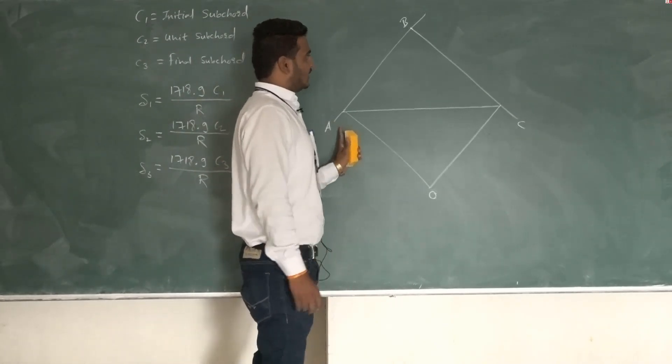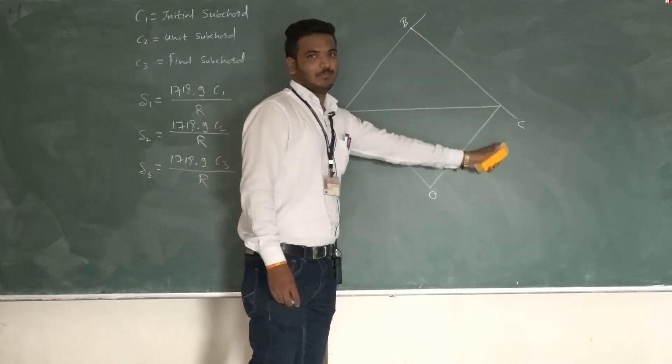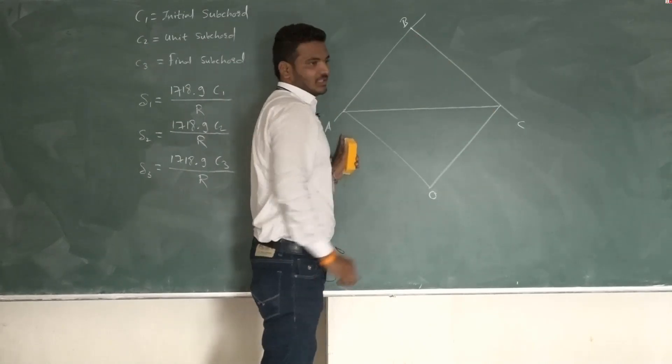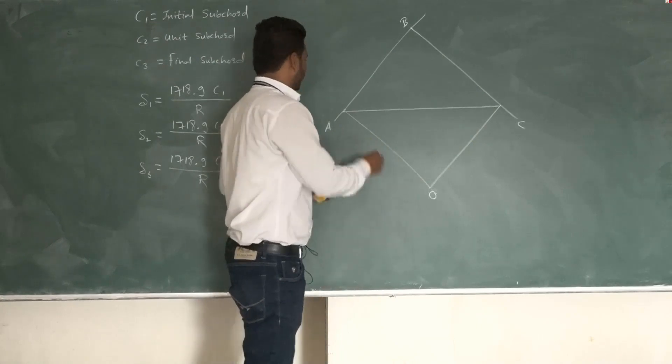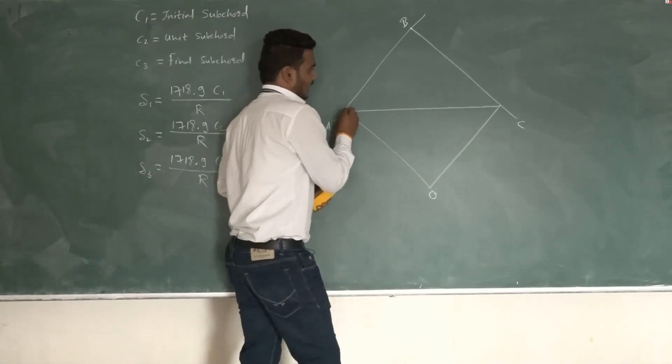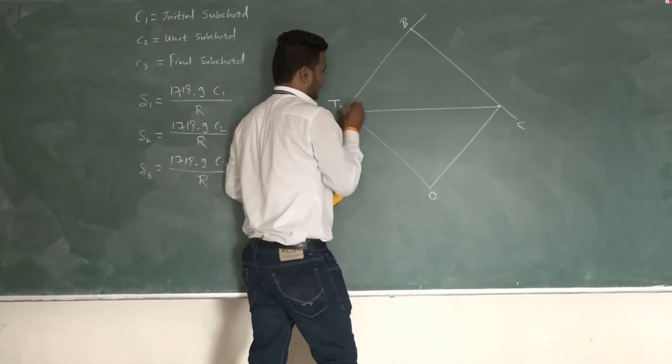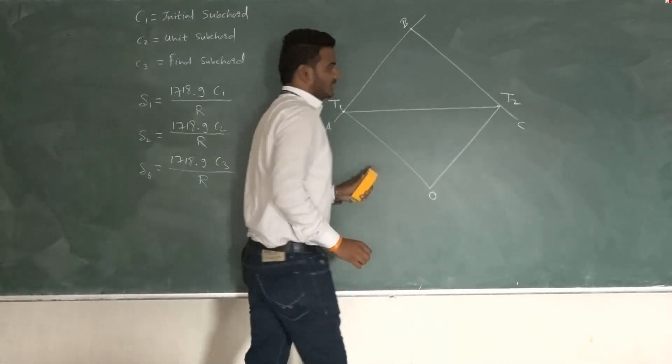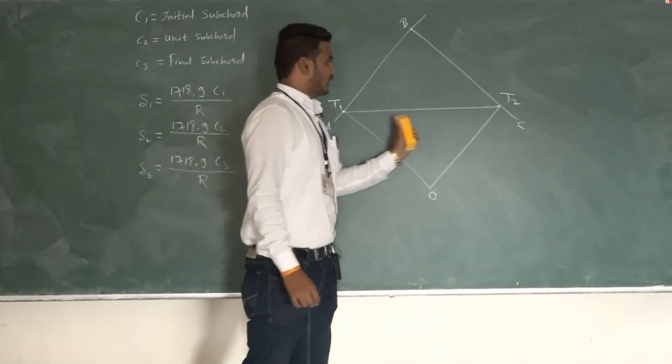Suppose we have to set out a curve between tangent AB and BC, where AB is the first tangent and BC is the final or last tangent. Suppose T1, T2 are the two tangent points in between which we have to set out a curve.